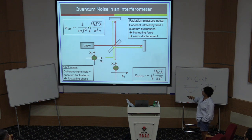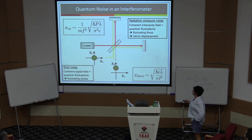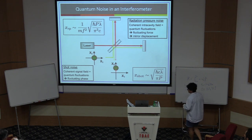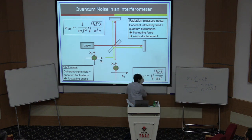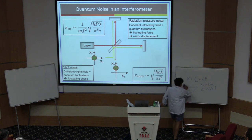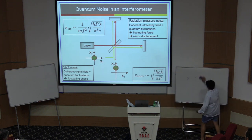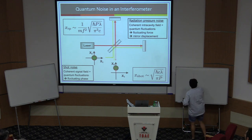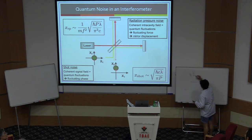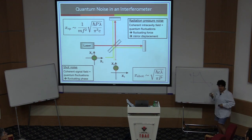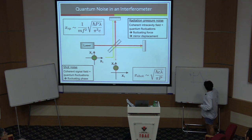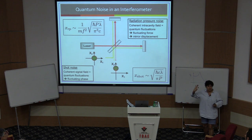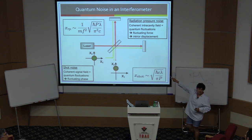That gives you the displacement sensitivity due to radiation pressure. This expression has a 1 over m times f-squared in it. Yesterday I showed you that a classical harmonic oscillator has a displacement-per-force spectrum that goes as 1 over f-squared as a function of frequency. So the 1 over f-squared part is simply saying that when I apply a force — the radiation pressure is a force — I'm interested in displacement, so the force-to-displacement conversion has that 1 over f-squared term. It has a mass in there as well, from the solution to the harmonic oscillator equation.